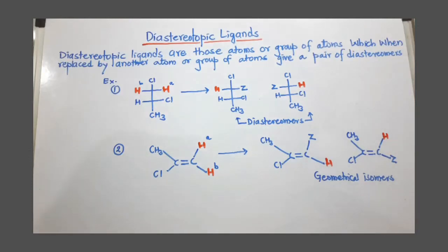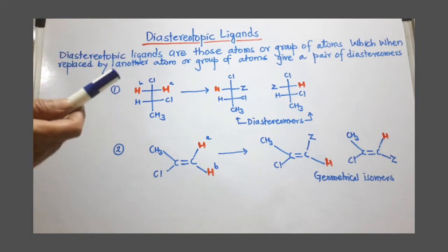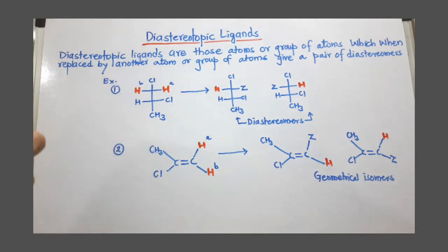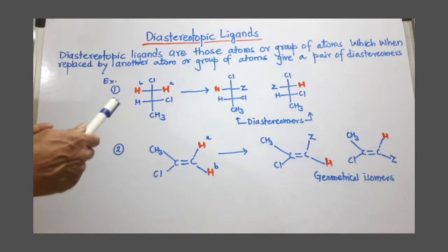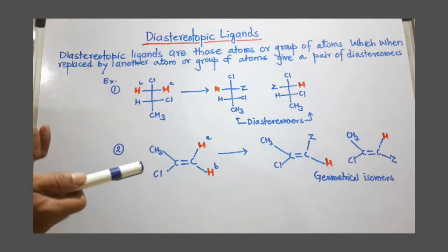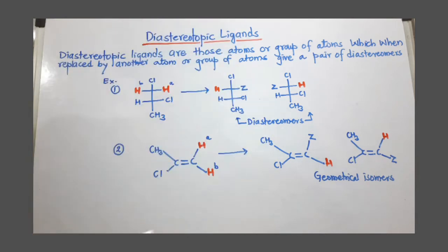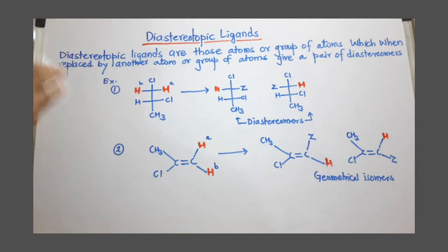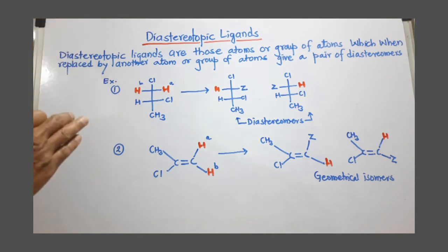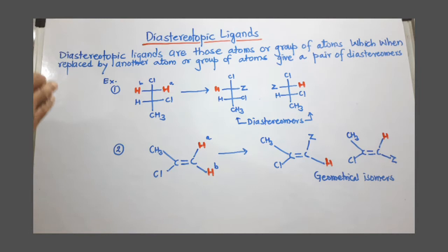We are discussing diastereotopic ligands. Similar to enantiotopic ligands, we replace protons one by one with another atom or group and see whether diastereomers are formed. If diastereomers are formed, those protons are stereochemically non-equivalent, and they are called diastereotopic ligands.